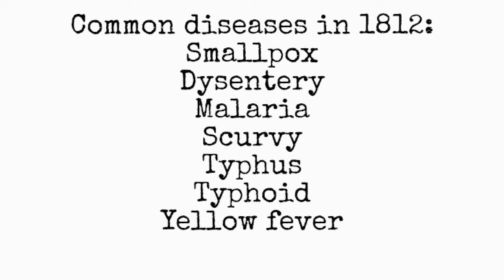Typhoid showed symptoms of fever, chills, weakness, muscle pain, diarrhea, and intestinal hemorrhage. Yellow fever was another disease transmitted by mosquitoes. Symptoms were fever, muscle ache, vomiting, jaundice, and kidney failure.